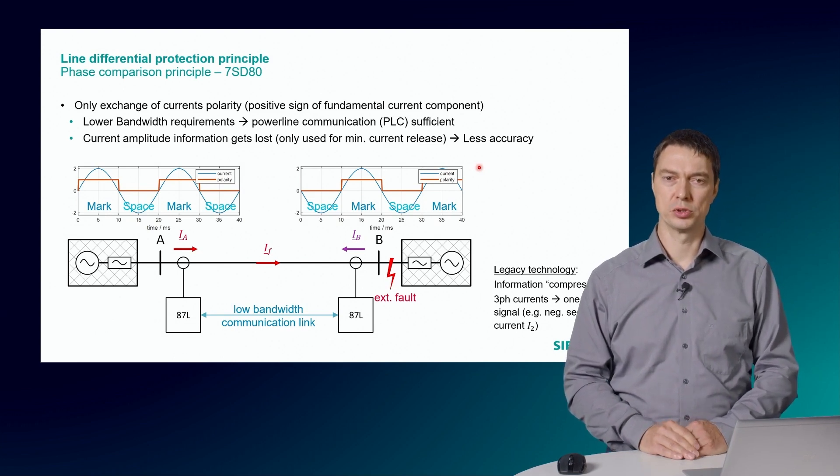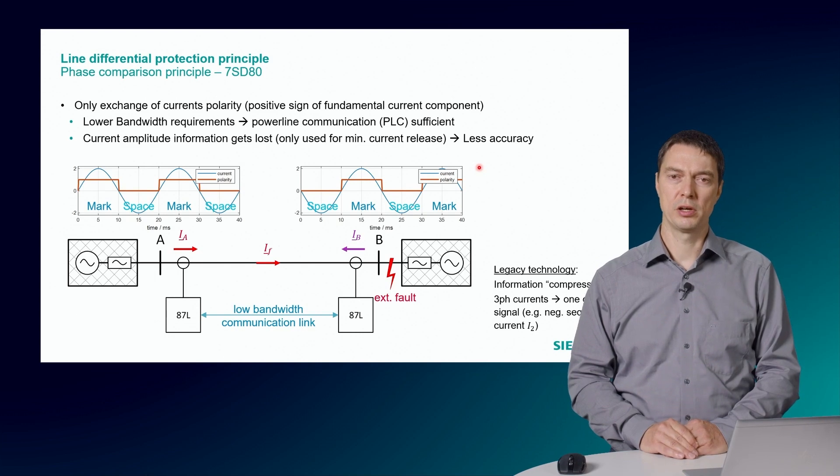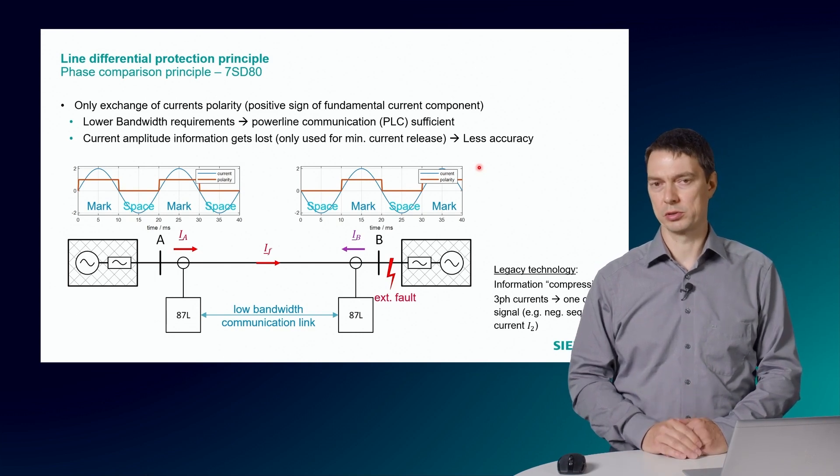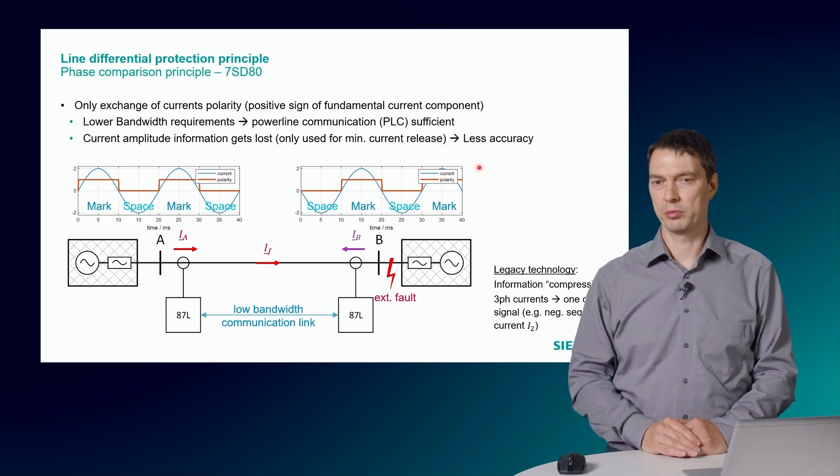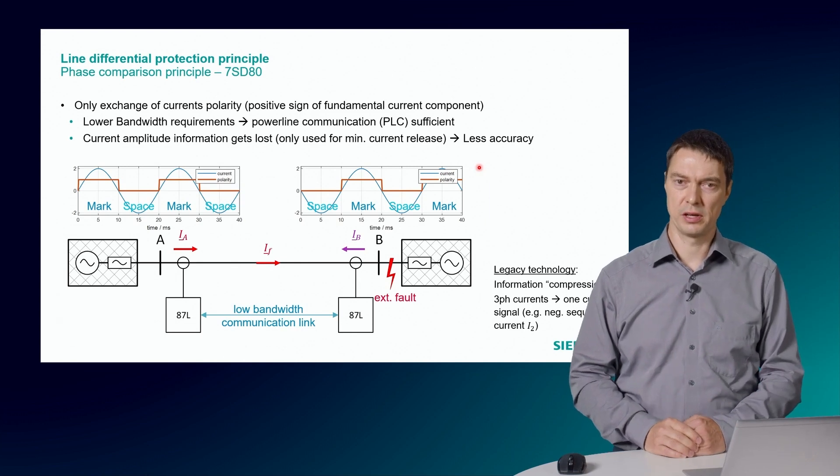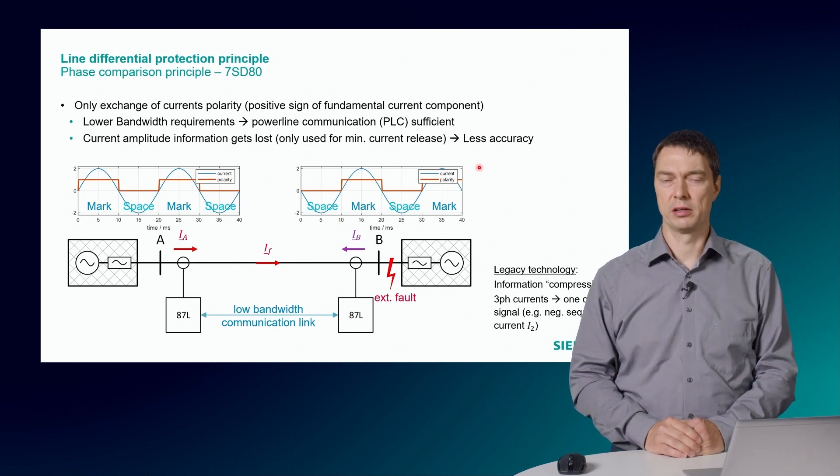The lower bandwidth requirements allow also that a power line communication system can be applied for this protection principle. The current amplitude is evaluated only for a release threshold. Therefore, some information is lost and this principle is less sensitive and accurate than a current differential protection.